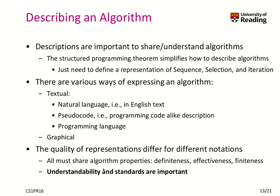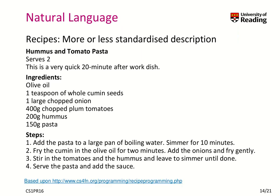Note that all algorithms must share the properties of definiteness and effectiveness. Let's look at an example in natural language — this is actually a recipe, and all recipes can be considered as a more or less standardized description. In a cookbook, you find different ways of describing different recipes. Between cookbooks there might be differences, but typically within a cookbook it looks very similar, so there is some kind of standard established. In this particular recipe we see hummus and tomato pasta — a short description, ingredients, and a set of steps.